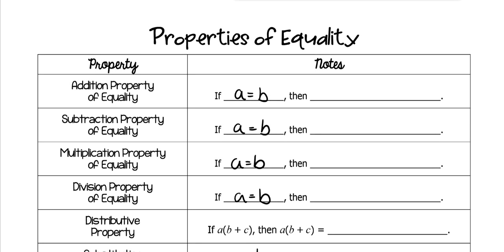If you add on both sides, that is called the addition property of equality. So in other words, if you have something like this and you add two to both sides, you're using the addition property of equality. That's all that that means.